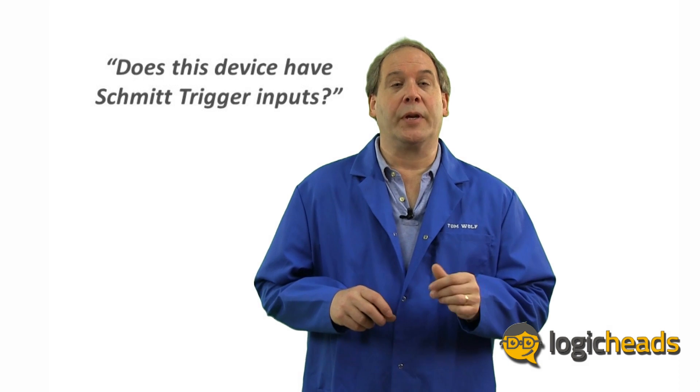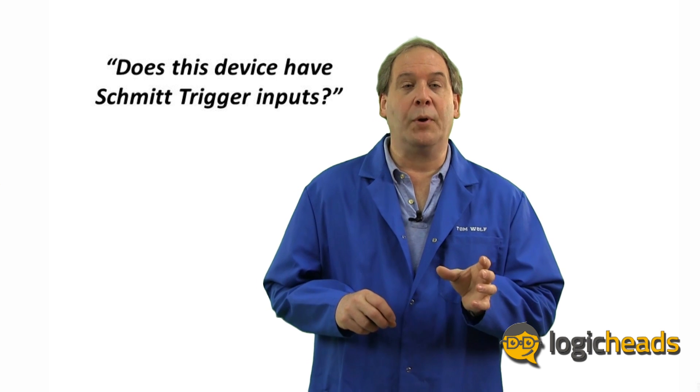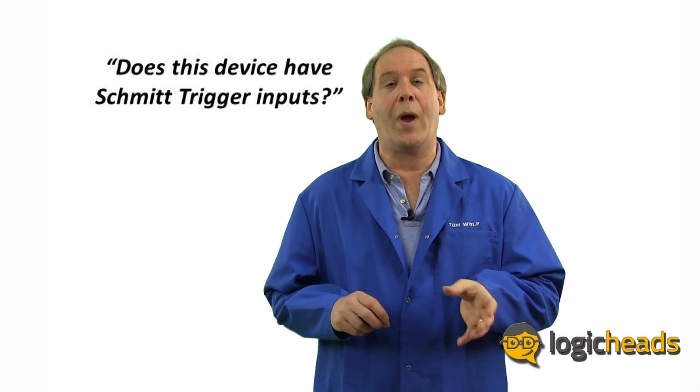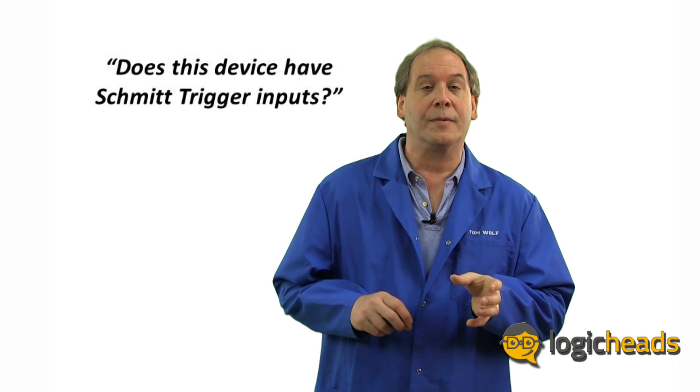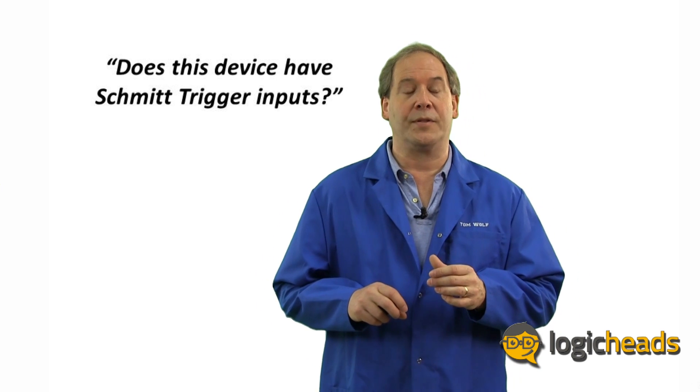Does this device have Schmitt trigger inputs? A Schmitt trigger, of course, is a type of input that helps reduce noise by making sure that the voltage swings well into the high or low states. It also has hysteresis to make sure that the voltage swings far enough one way before it swings back for a new transition.